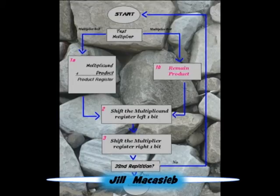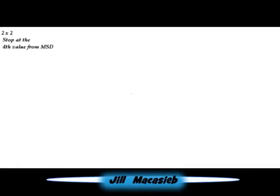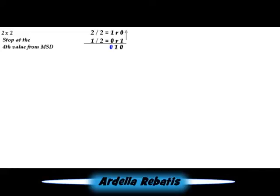This is the chart of implementing multiplication. For example, 2 times 2. Stop at the fourth value from the most significant digit. Divide the given into 2. If the answer is positive, you need to add 0. Place the multiplicand and multiplier. Count the bits of the multiplicand and add 0 to the multiplier.